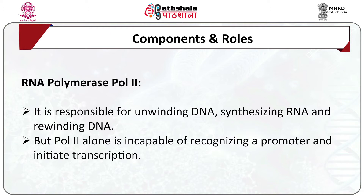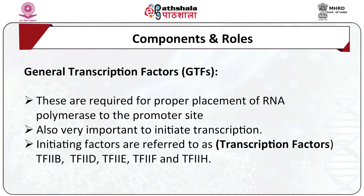RNA polymerase 2 is responsible for unwinding the DNA, synthesizing RNA, and rewinding the DNA. But polymerase 2 alone is incapable of recognizing a promoter and initiating transcription — it requires various other factors called general transcription factors. General transcription factors are required for proper placement of RNA polymerase to the promoter site and to initiate transcription.